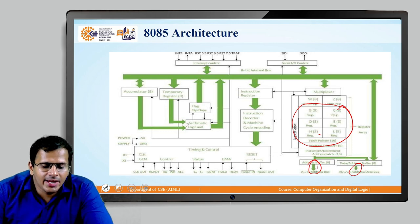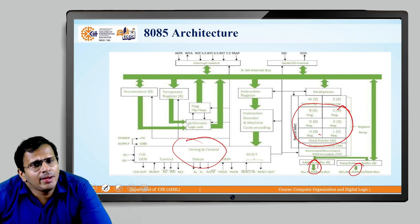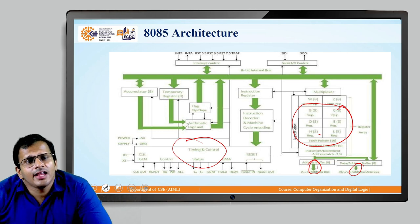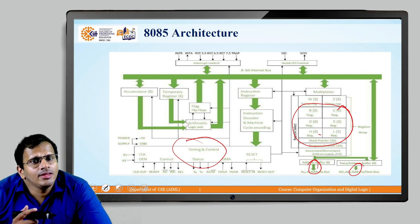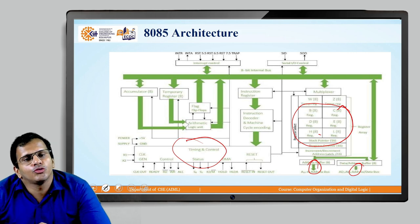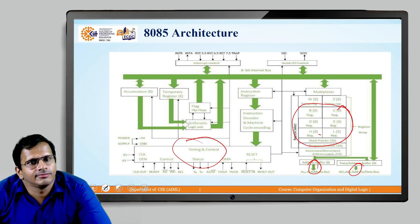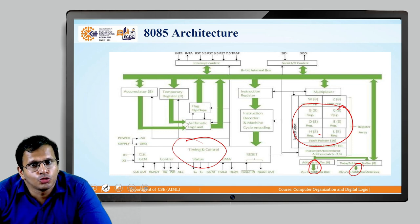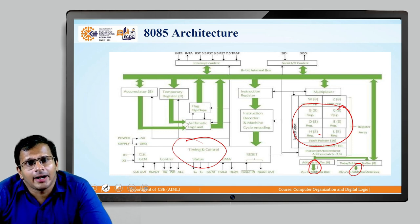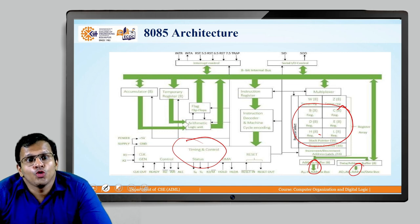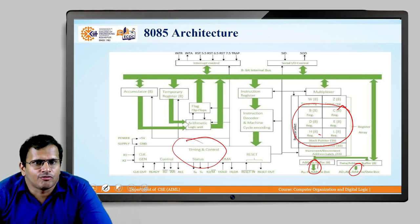The timing and control unit is like the brain of the human being. Just as the brain provides signals to the hands, legs, and other body parts to perform operations, the timing and control part provides signal control to all other units to indicate what operation needs to be performed.